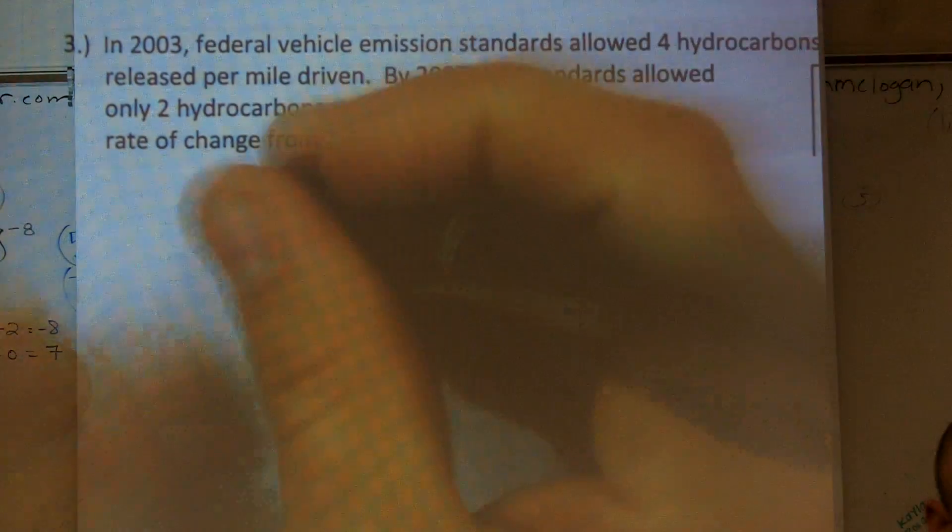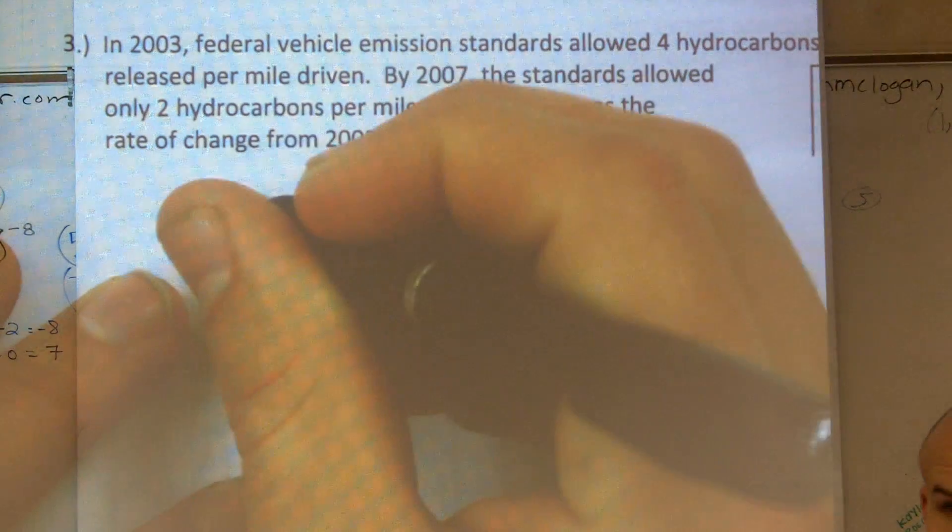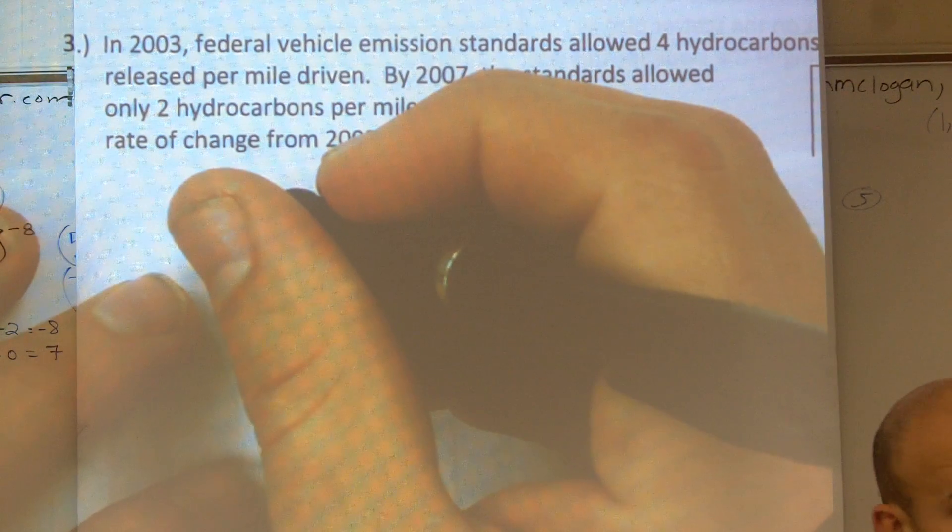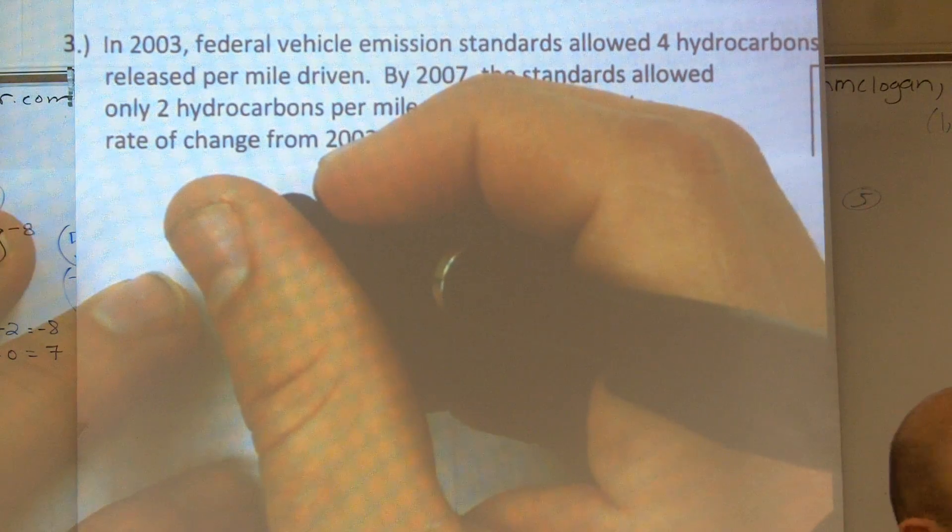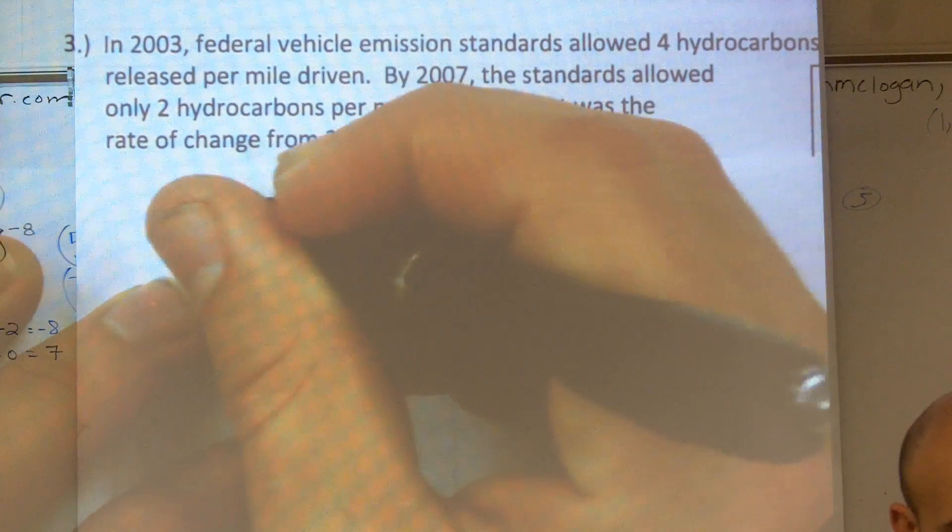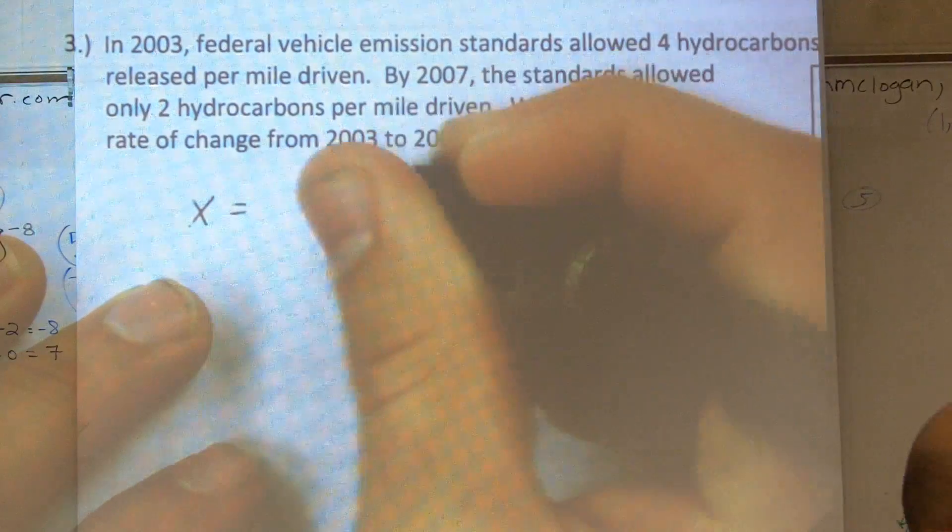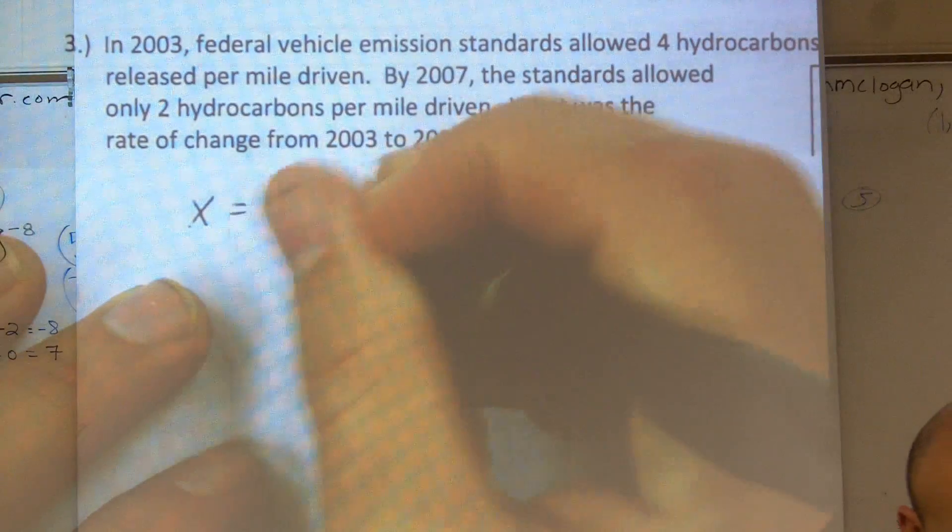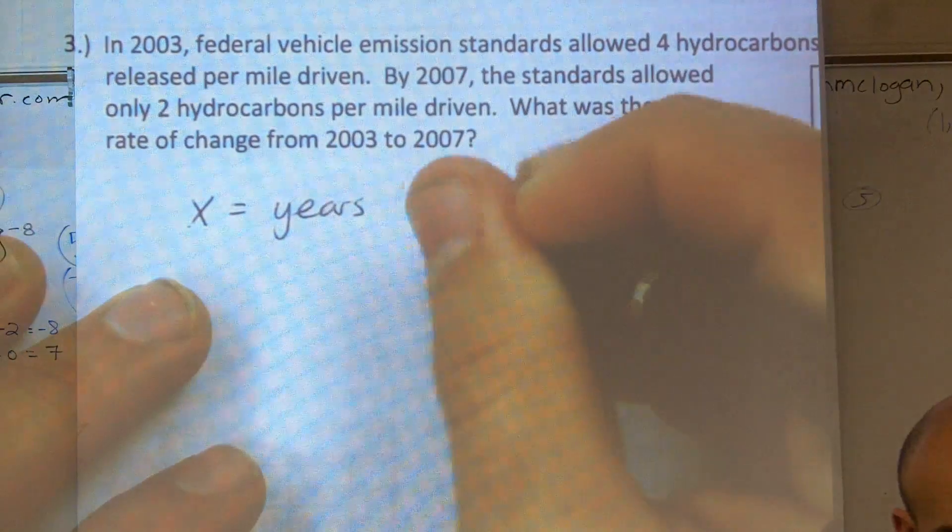So therefore, what I can say is my years are my dependent variable. And dependent is our what? I'm sorry. Years are our independent variable, right? So therefore, x is going to be the years, because they are independent.